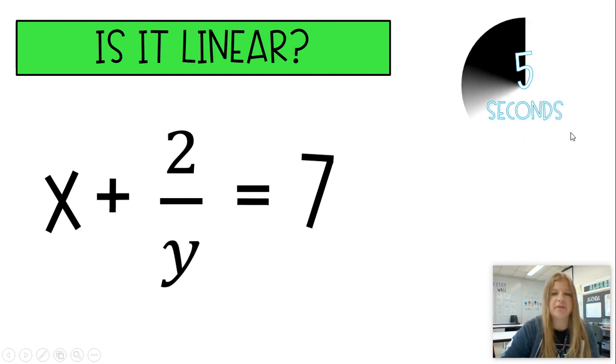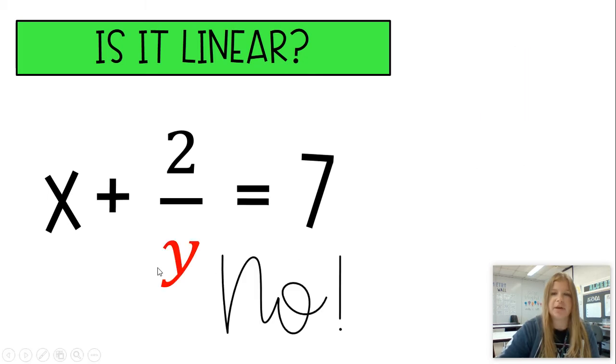X plus 2 over Y equals 7. Definitely not linear. If you see you are dividing by a variable, it's definitely not going to be a linear equation.